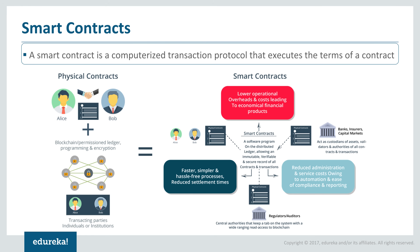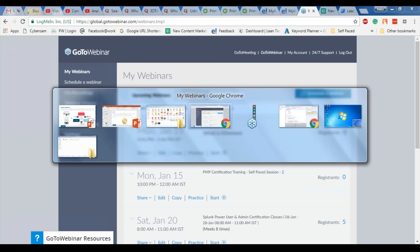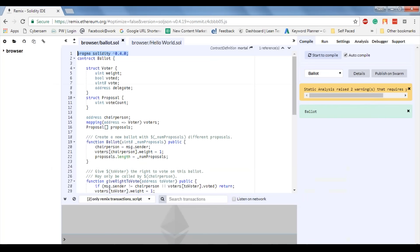Since it's open and no human intervention can manipulate it, this becomes a trustless system wherein you don't have to put your trust in someone else, making operations transparent and easy. For those looking for an opportunity in the blockchain domain, this is what you need to look out for, because today there is a huge demand for people who can write smart contracts. Let me give you a sample idea of what a smart contract looks like.